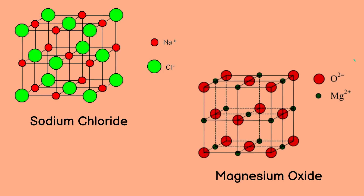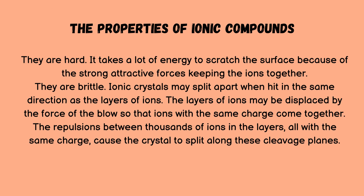These are the structures representing the giant ionic lattices of sodium chloride and magnesium oxide. The properties of ionic compounds: they are hard — it takes a lot of energy to scratch the surface because of the strong attractive forces keeping the ions together. They are brittle — ionic crystals may split apart when hit in the same direction as the layers of ions.